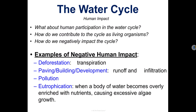Let's start with deforestation. In deforestation, you're cutting down trees and plants, and that's automatically going to decrease the amount of transpiration happening because now there are no more plants for water vapor to leave and go back up into the atmosphere from.